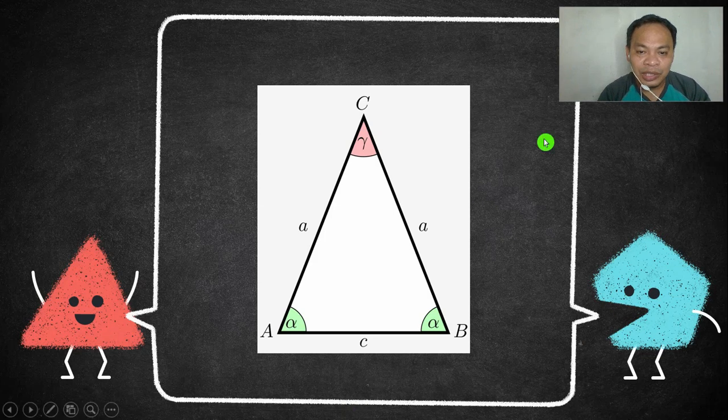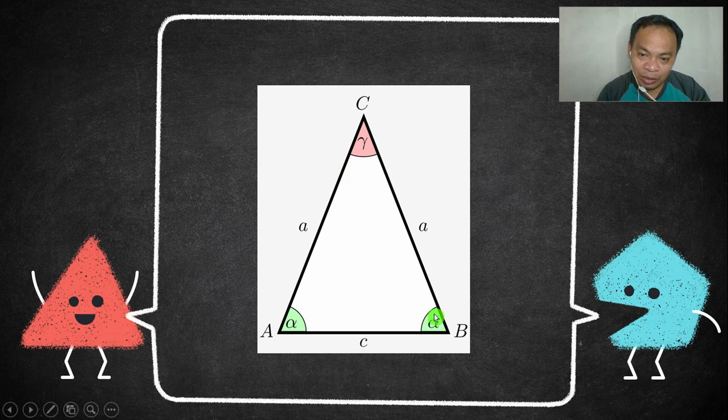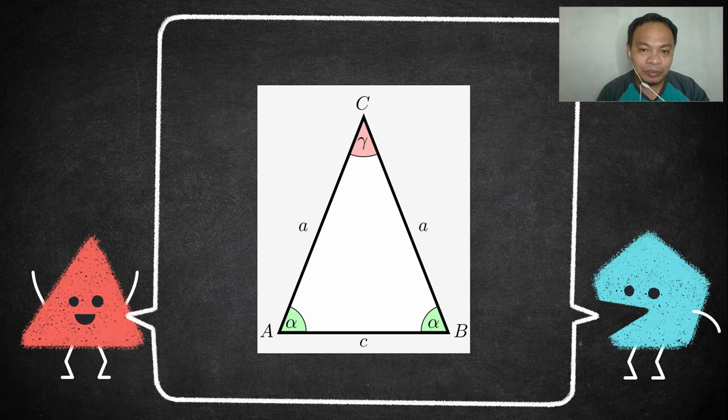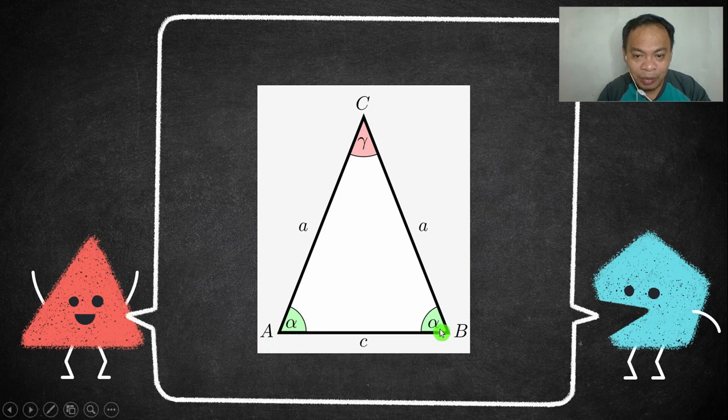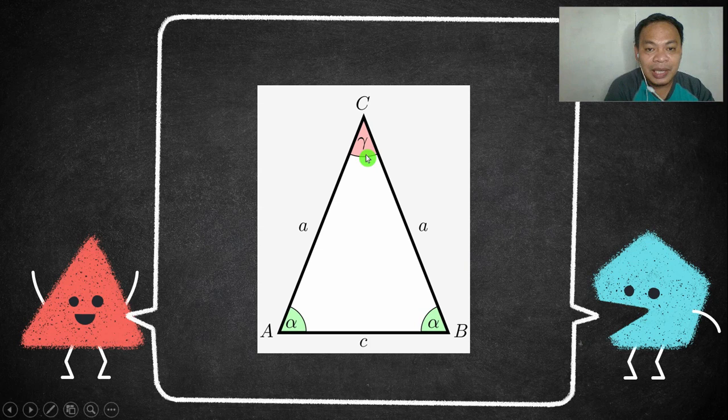We have here the drawing. This is an isosceles triangle. Side AC and side BC are congruent. So these are the legs of our isosceles triangle. The opposite angles of the congruent sides, the opposite angle of AC is here, and BC's opposite angle is this one. These are what we call base angles. The third side, which is not congruent, side AB, is the base. And the opposite angle of the base, this one, is our vertex angle.